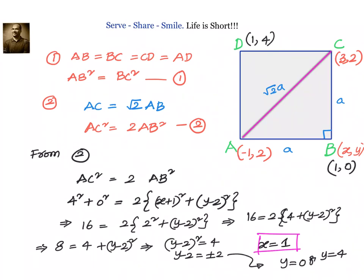Let's recap: we were given square ABCD with opposite vertices A and C, and had to find the remaining two vertices. We leveraged 10th grade concepts — distance between two points and properties of a square. The two conditions were: all sides equal, and diagonal squared equals two times the side squared. Condition 1 gave us x = 1. Substituting into Condition 2 gave y = 0 or y = 4. So the vertices are B(1, 0) and D(1, 4).